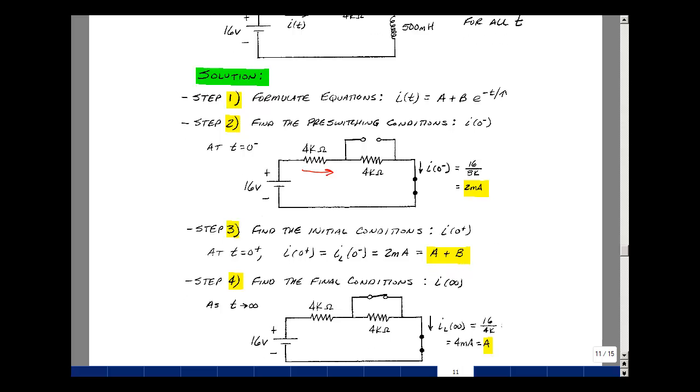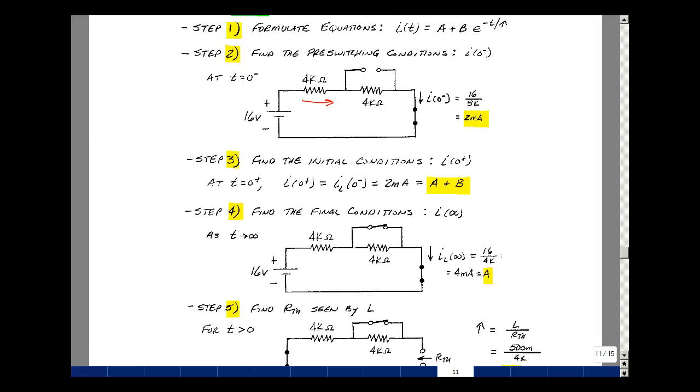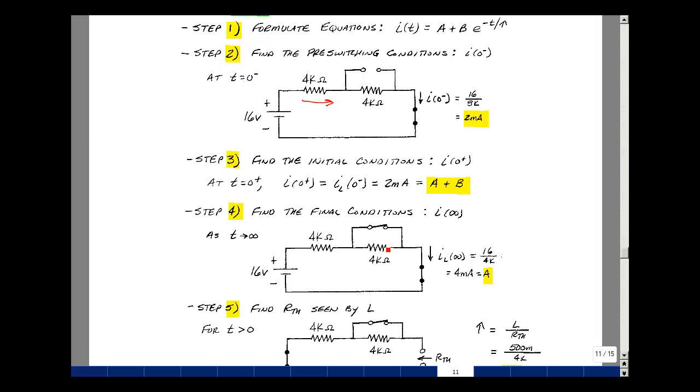Step 4 is to find the final condition to get another equation in our two unknowns. But now the switch is closed. We have a short circuit in parallel with 4k. Anything in parallel with zero is zero. In other words, zero times 4k over zero plus 4k is zero.